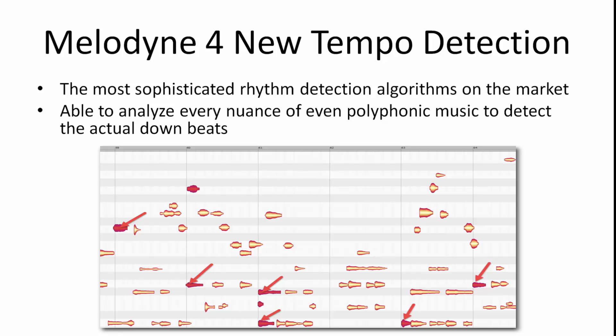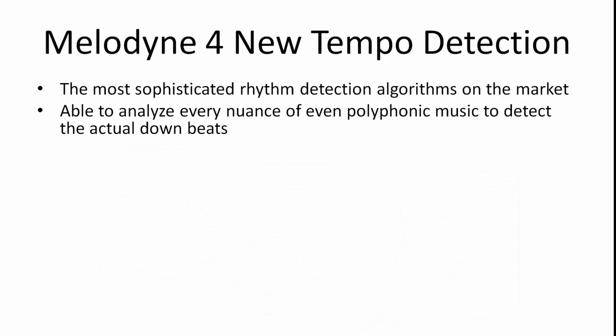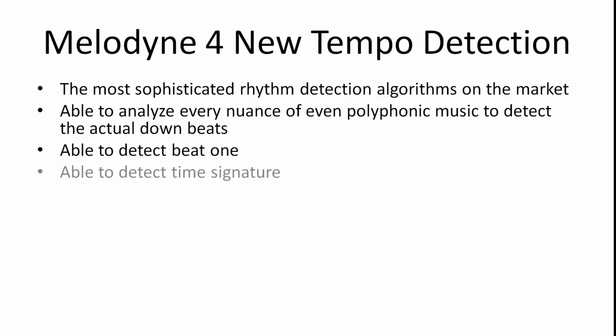When I say downbeat, I mean beat number one of each measure, so it can actually figure out where the measures are. It has the ability to detect beat one in the song and also detect time signatures.